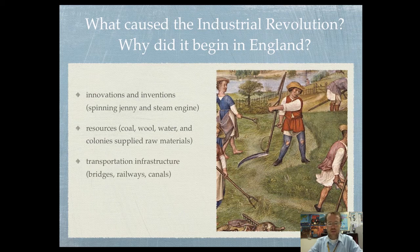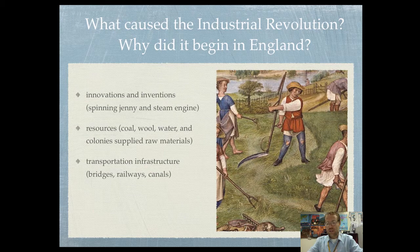You also have to have infrastructure. In England, it was transportation — bridges, railroads, canals. These were already all being built, and therefore it helped increase the speed of the Industrial Revolution.